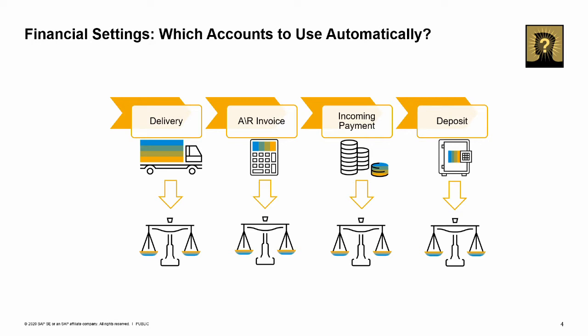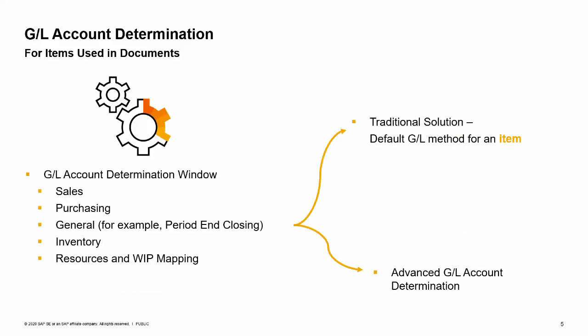In the Journal Entries that are automatically posted by documents in SAP Business One, how does the system know which accounts to use? The system knows which accounts to use because when you initialize SAP Business One, you define default GL accounts related to specific business processes in the GL account determination window. In this window, you also define control accounts that link the business partner subledger accounts to the general ledger. First, let us review how accounts are determined for items used in business processes. When you first implement SAP Business One, you define default GL accounts to be used when transactions are created during the different business processes, such as sales, purchasing, and inventory. These default accounts are defined in the GL account determination window under the administration module Setup Financials.